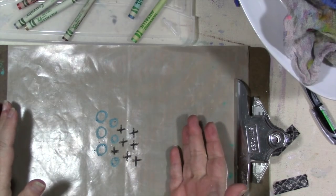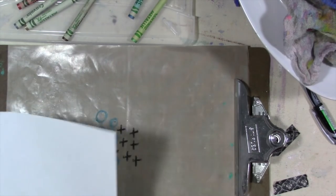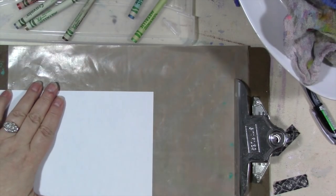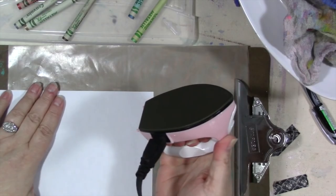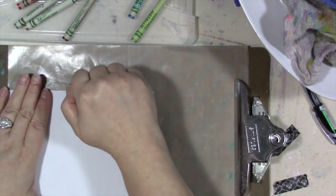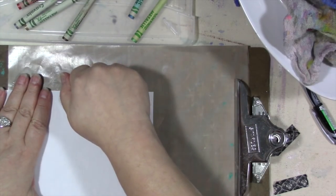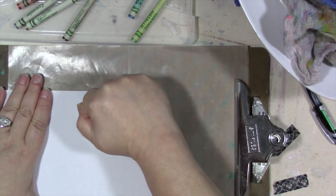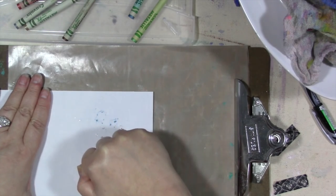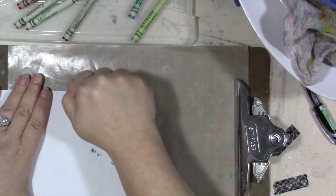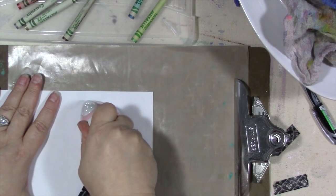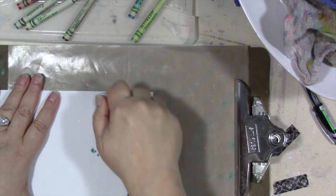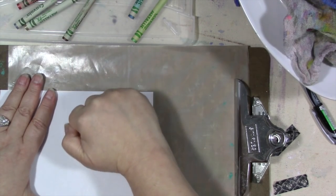Then take a piece of thin paper like just cheap drawing paper, and this is a craft iron. It is one that I have just for the craft room. I would not recommend doing this with the one you're going to iron clothes with. This is not for little kids to do. This is going to get hot, keep your fingers out of the way. Please take all precautions and melt that crayon, get it hot through the paper with your iron.